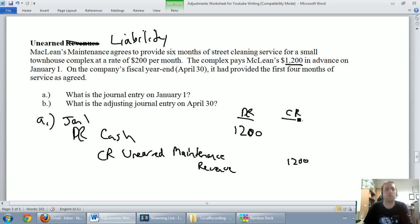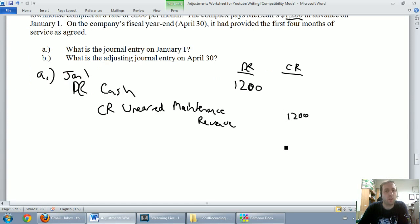So debit cash because we've got $1,200 of cash coming in the door. Credit unearned maintenance revenue. We want to earn maintenance revenue, we're going to as time goes by, but we haven't earned any yet. We owe these guys $1,200 worth of maintenance. So this journal entry was a transaction. We transacted some business. They gave us money. We recorded a journal entry. The B part of this is our adjusting journal entry. So let's move on to B.